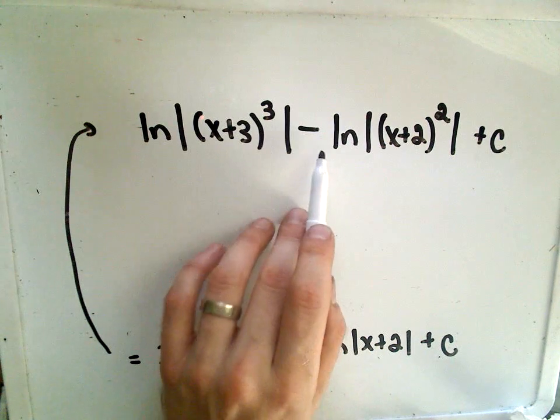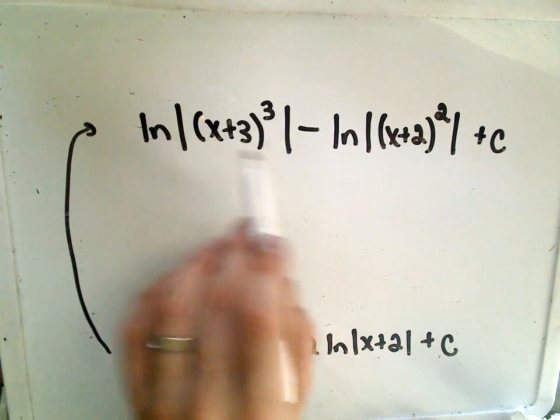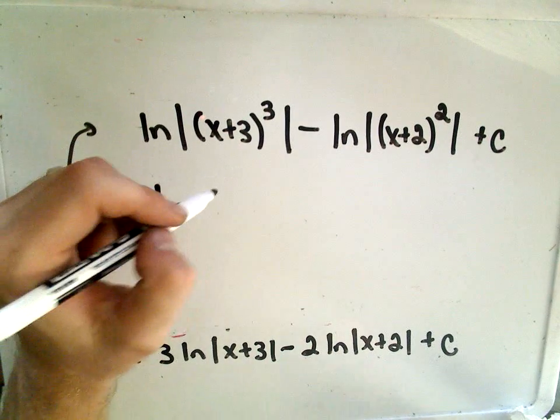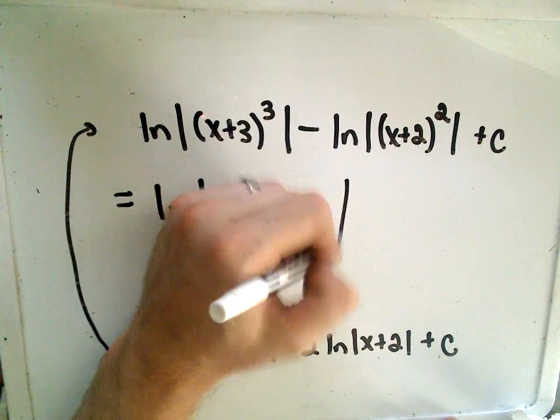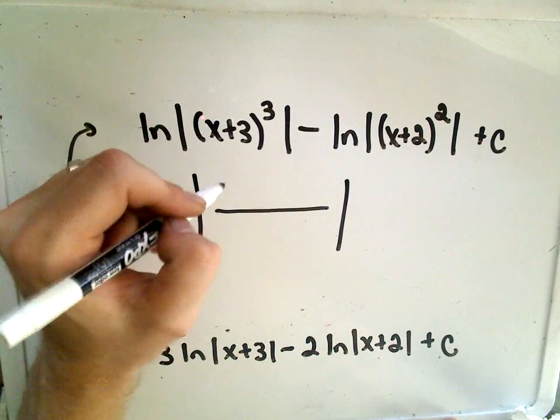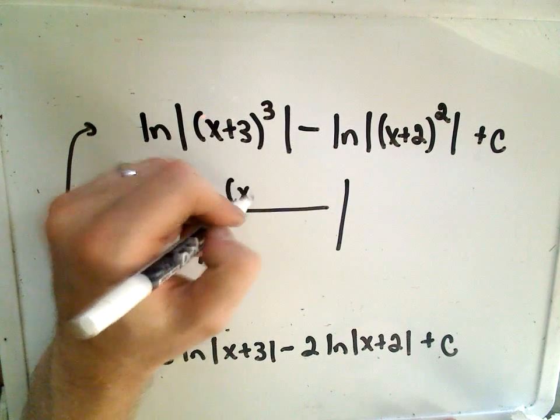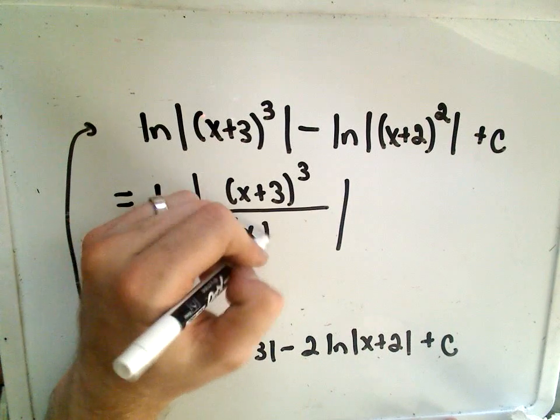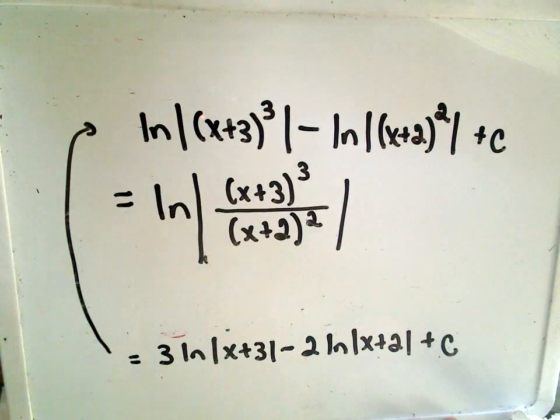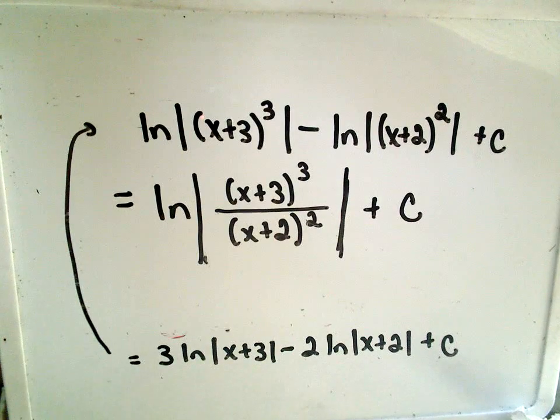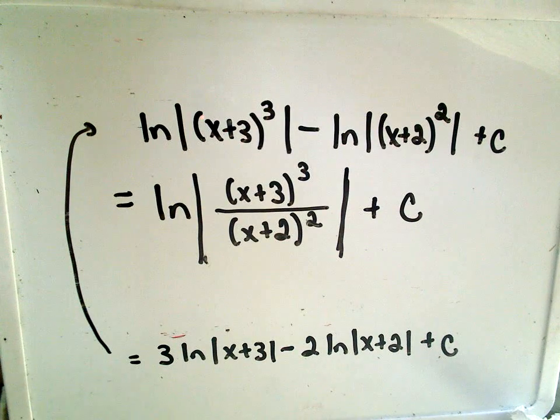So I'll have the natural logarithm of the absolute value of x plus 3 quantity cubed. I'm going to leave the minus sign in the middle and make that the natural logarithm of x plus 2 quantity squared plus c. And remember, lastly, there's this property of logarithms that if you're subtracting two logarithms, you can simply turn that into division as long as they're the same base. So on top, we have x plus 3 quantity cubed. In the denominator, we'll get our x plus 2 quantity squared. All that should be inside of absolute value plus c. And there's our answer to that question.